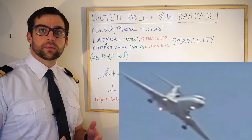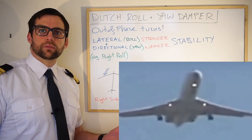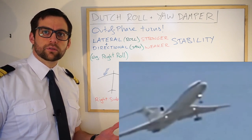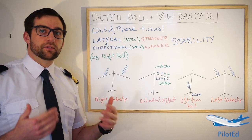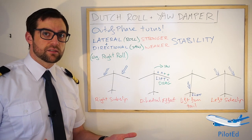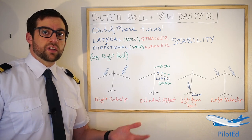Some aircraft suffer from Dutch roll naturally. It's also performed as an acrobatic maneuver. Dutch roll is named after a pair of Dutch ice skaters — you can search for videos online.